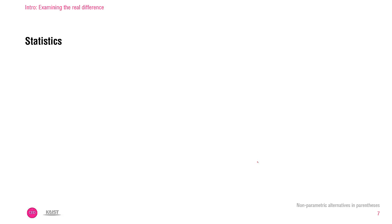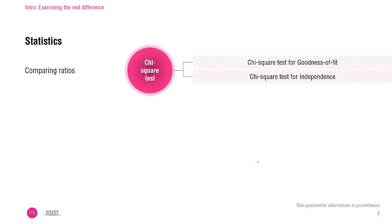As described through the three examples, we can design different research hypotheses. Depending on how the variables are designed or how their relationships are designed, you can find more proper statistics. When you are examining the real difference among frequencies, you perform the chi-square test. The frequency is, in fact, a matter of ratio. When you need to compare ratios, you can conduct a chi-square goodness-of-fit test if you have one variable, and a chi-square test for independence when you have two variables.